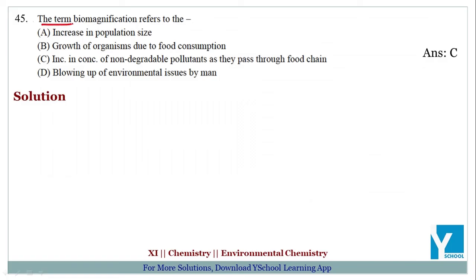The question is: the term biomagnification refers to — (A) increasing population size, (B) growth of organism due to food consumption, (C) increasing concentration of non-degradable pollutants as they pass through food chain, (D) blowing up of environmental issue by man. The answer is C.